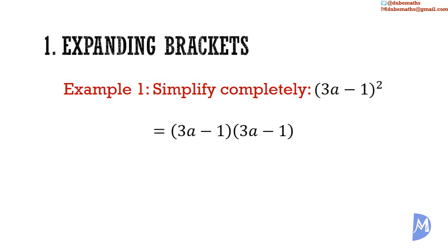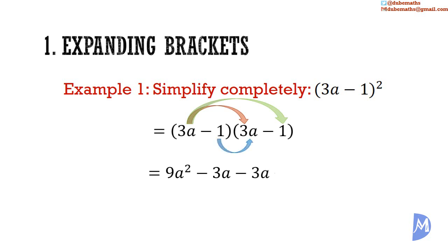Multiplying: 3a by 3a is equal to 9a squared. 3a by negative 1 is equal to negative 3a. Negative 1 by 3a is equal to negative 3a. And negative 1 by negative 1 is equal to positive 1. Simplifying further, negative 3a minus 3a is equal to negative 6a. So we get 9a squared minus 6a plus 1.